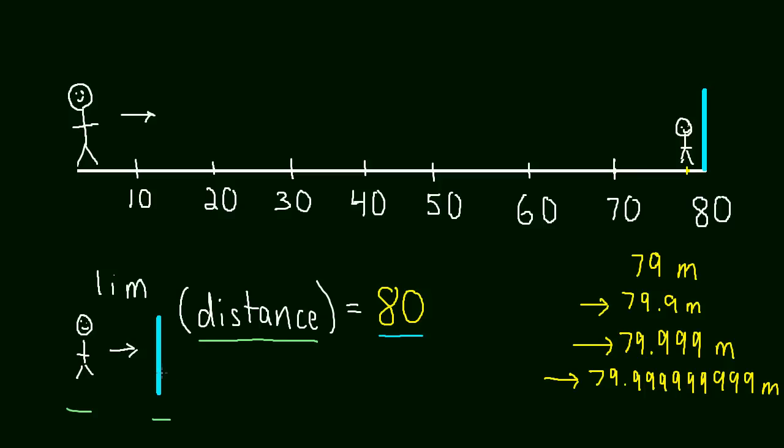Let me just reiterate that one more time. As this guy gets closer and closer to the wall, what does the distance get closer and closer to? You can see, just from looking at these numbers over here, the distance is getting closer and closer to 80. And the interesting thing about all of this, the reason we even have limits, is because his distance, his actual distance, can never actually equal 80. His distance can't ever equal 80 because there's a wall there.